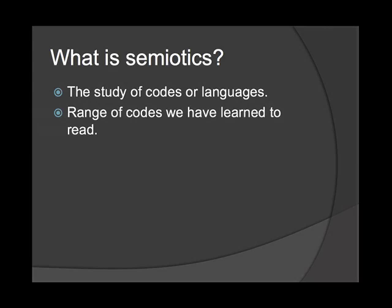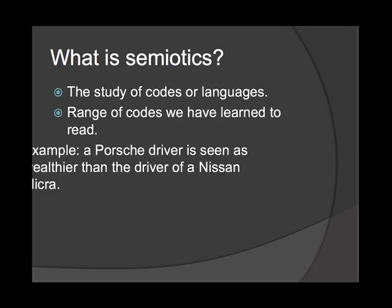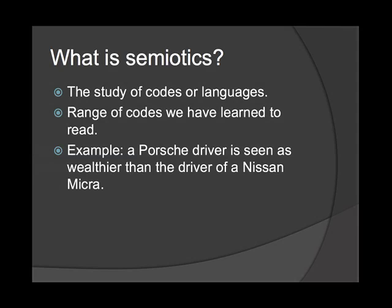Semiotics has extended to many different areas. For example, the clothes someone wears or the car they drive sends a certain message and gives information to the viewer. For example, when you see a Porsche driver, they are seen as more wealthy than the driver of a Nissan Micra.